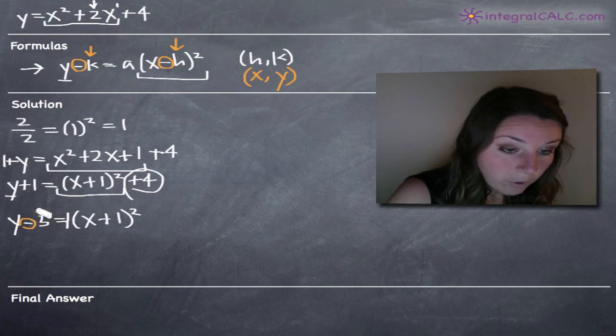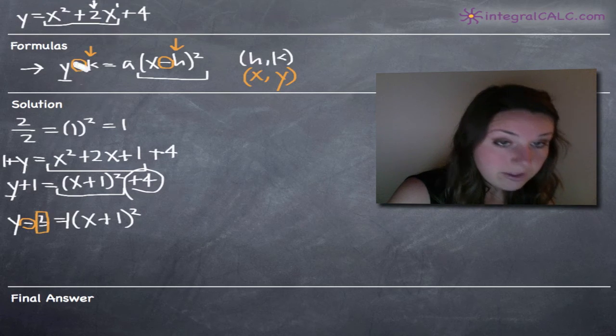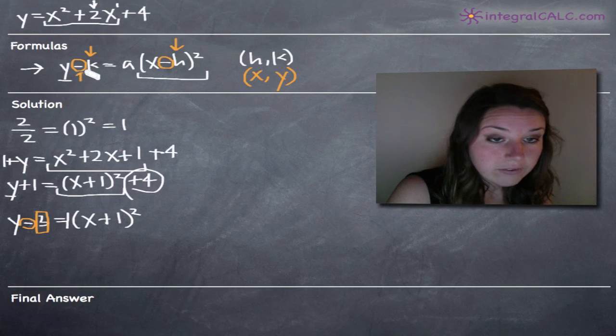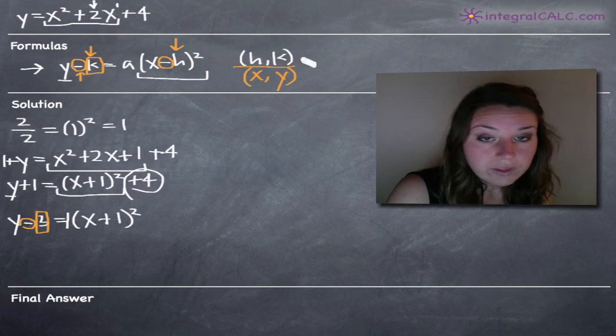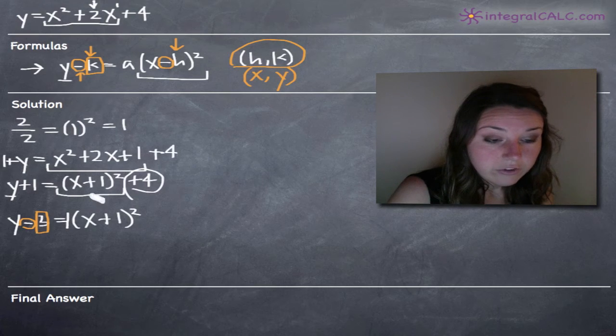Which means that in our equation, when we have a negative sign, we can just pull out the number itself, right? Because up here we've got the negative sign but we just pull out the k for the vertex.